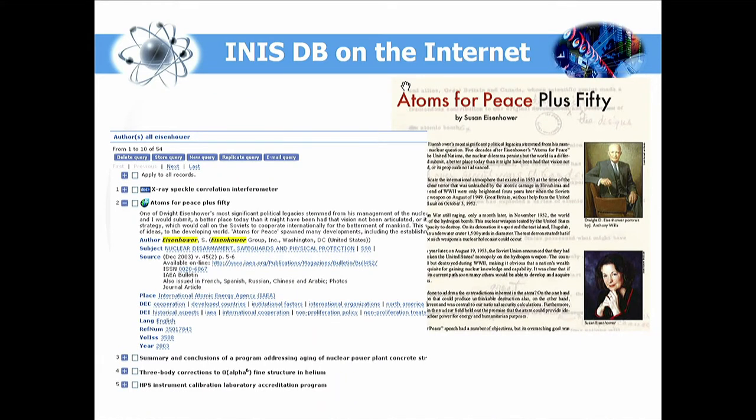This is an example from INIS where we can see bibliographical description metadata and immediately go to full text. It is an article by Susan Eisenhower about her father, President of the United States, who in 1953, at the UN General Assembly, suggested creating a special international mechanism — after which the International Atomic Energy Agency was established.